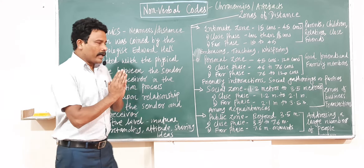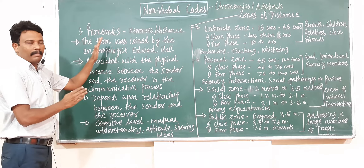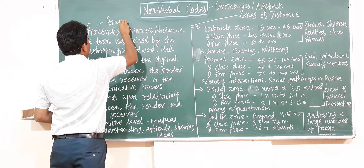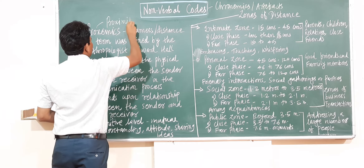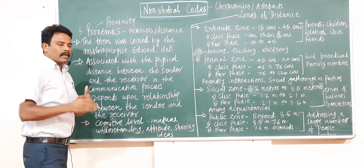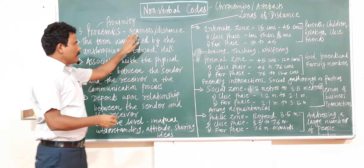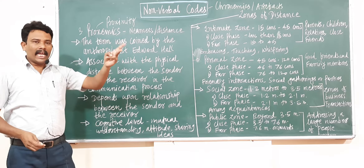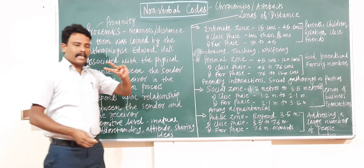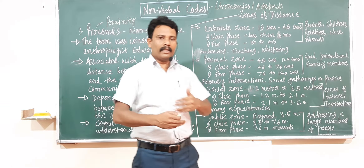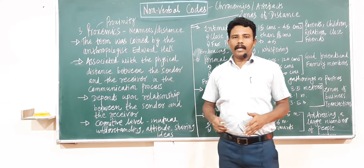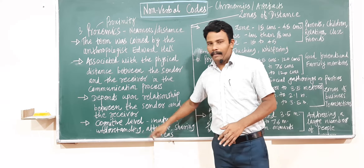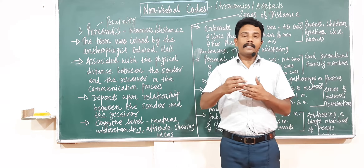Now we are going to talk about Proxemics, which means Proximity. What is Proximity? That is nearness or distance. There are two types of distances: one is physical distance between the sender and the receiver, and the second one is cognitive level distance or proximity.